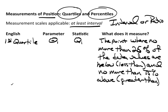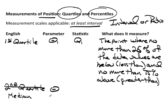The next quartile — we don't actually call it the second quartile. Normally we simply call it the median, and we already talked about the median. The parameter is theta — technically theta-two, but nobody describes it as theta-two, it's simply theta the median. The statistic is M, and the definition is no more than 50 percent below, leaving 50 percent above.